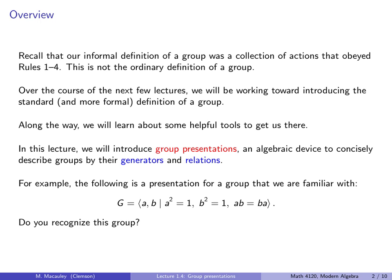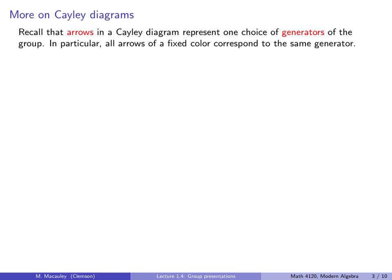Recall that arrows in a Cayley diagram represent one choice of generators of the group. In particular, all arrows of a fixed color, or type, correspond to the same generator. Our choice of generators influence the resulting Cayley diagram.